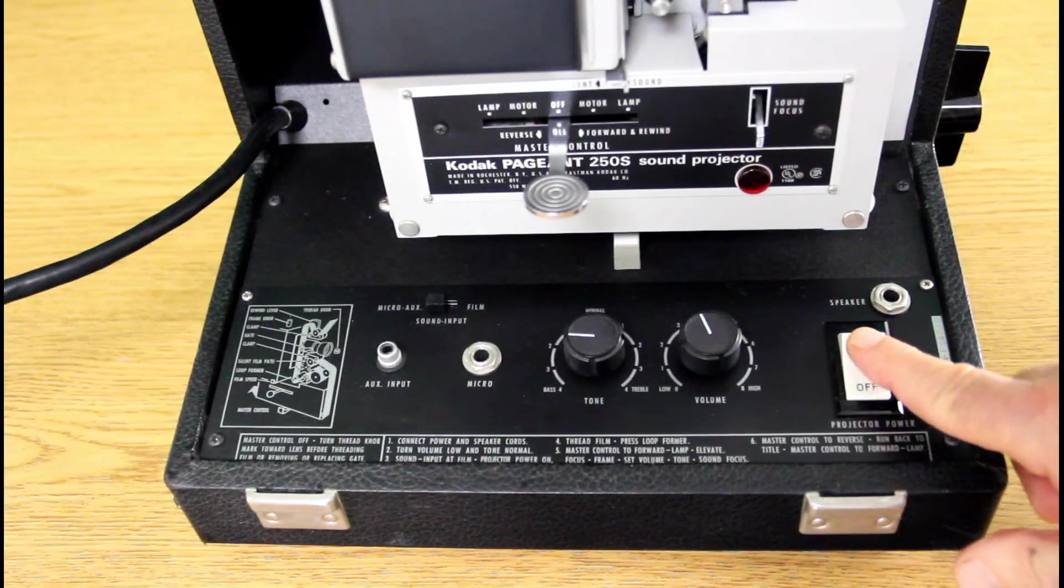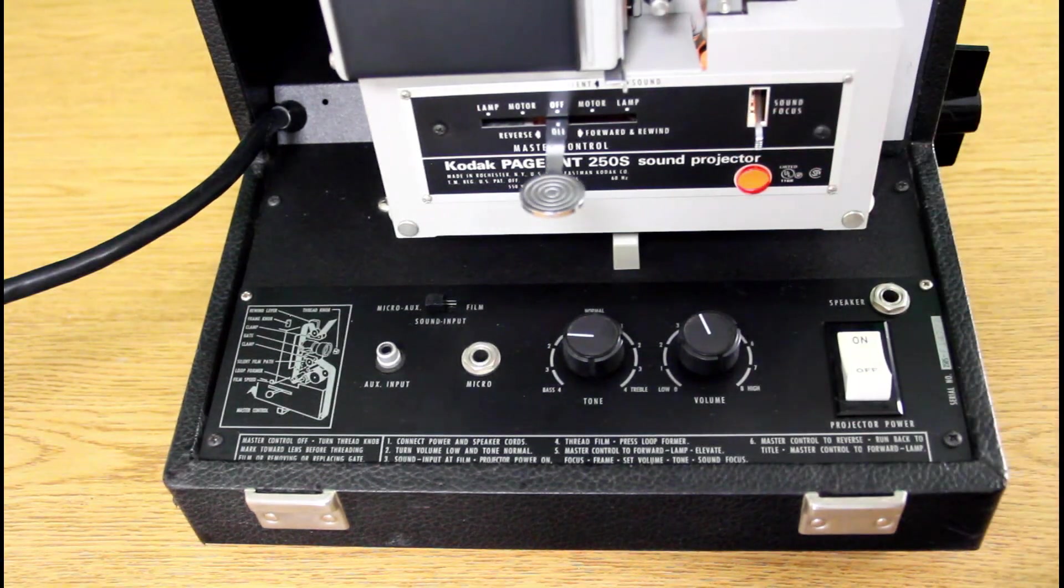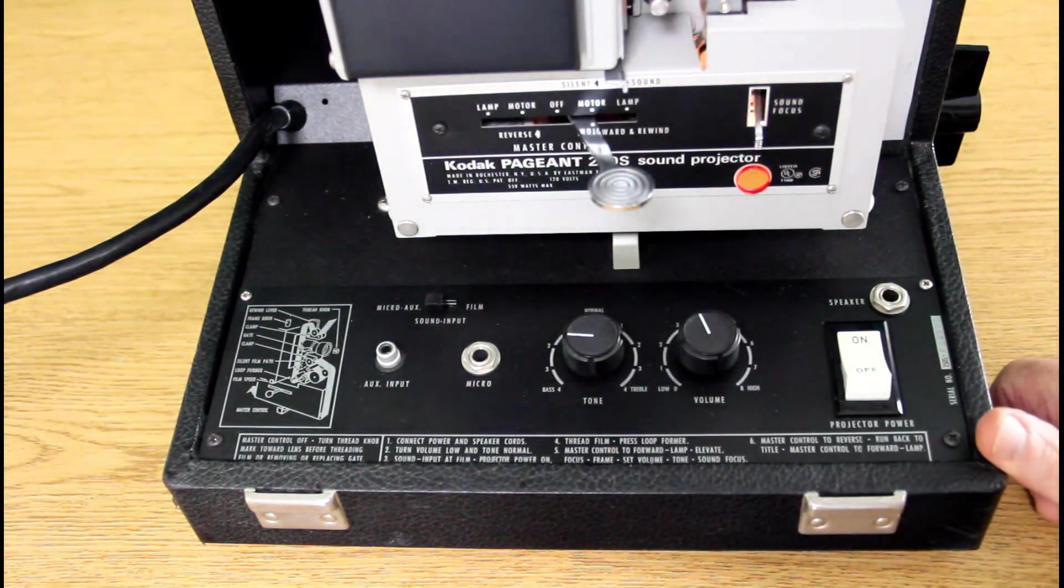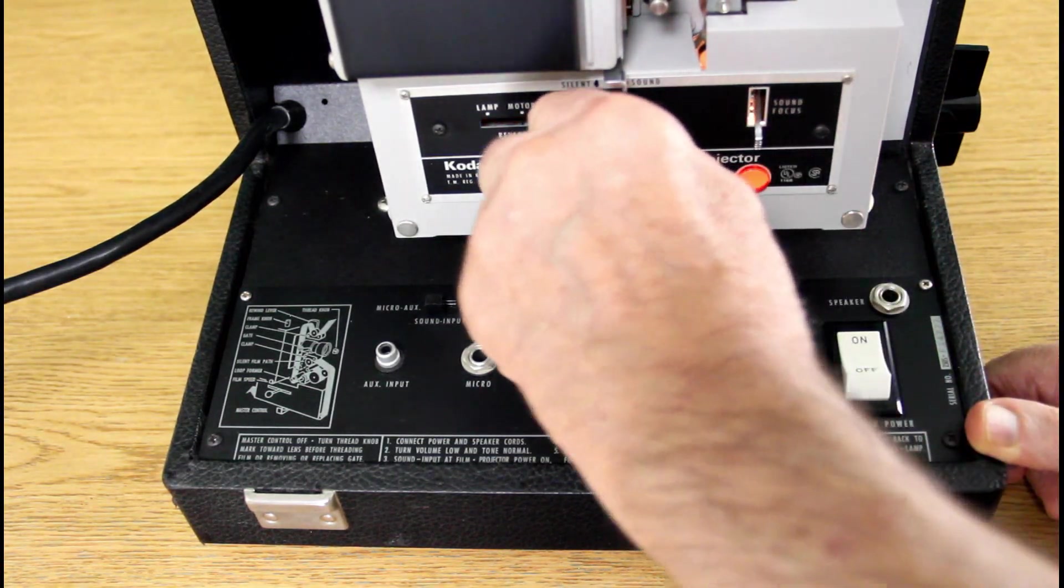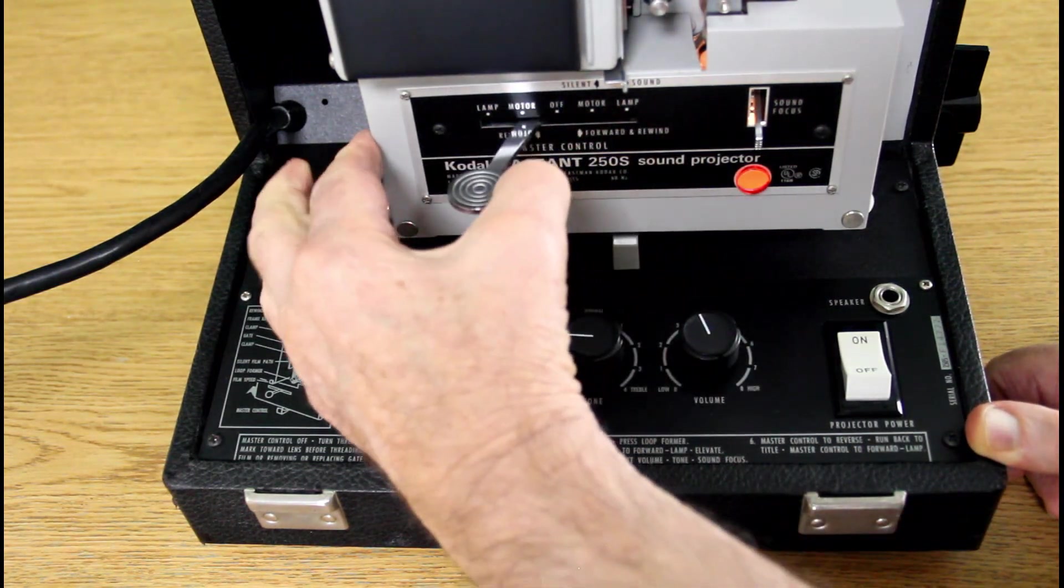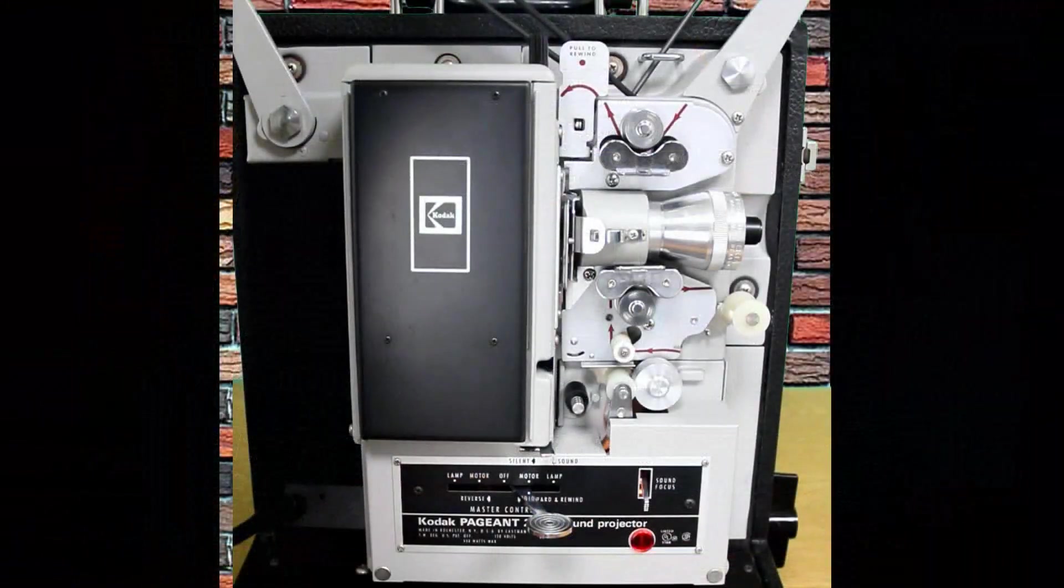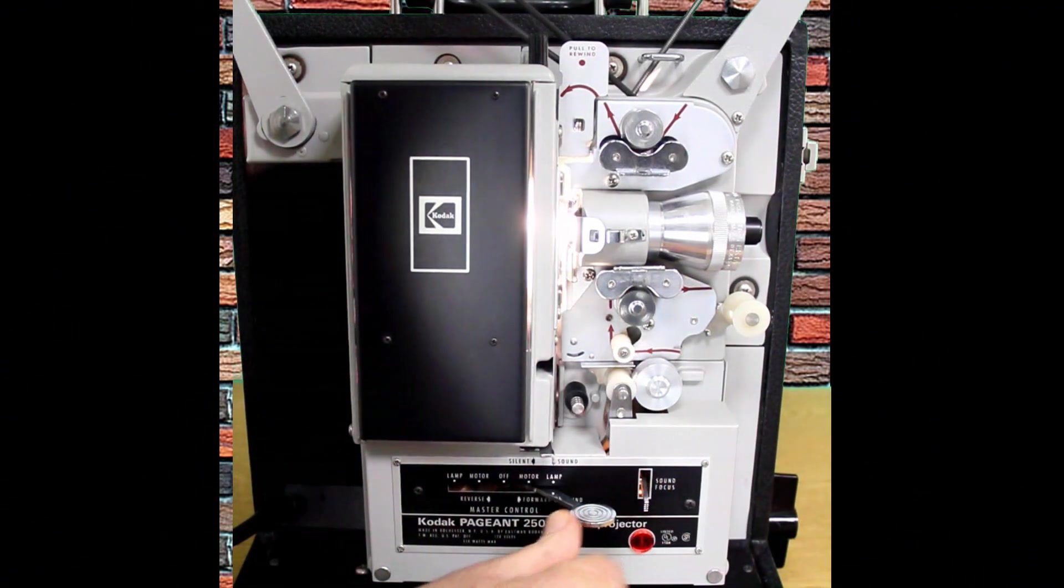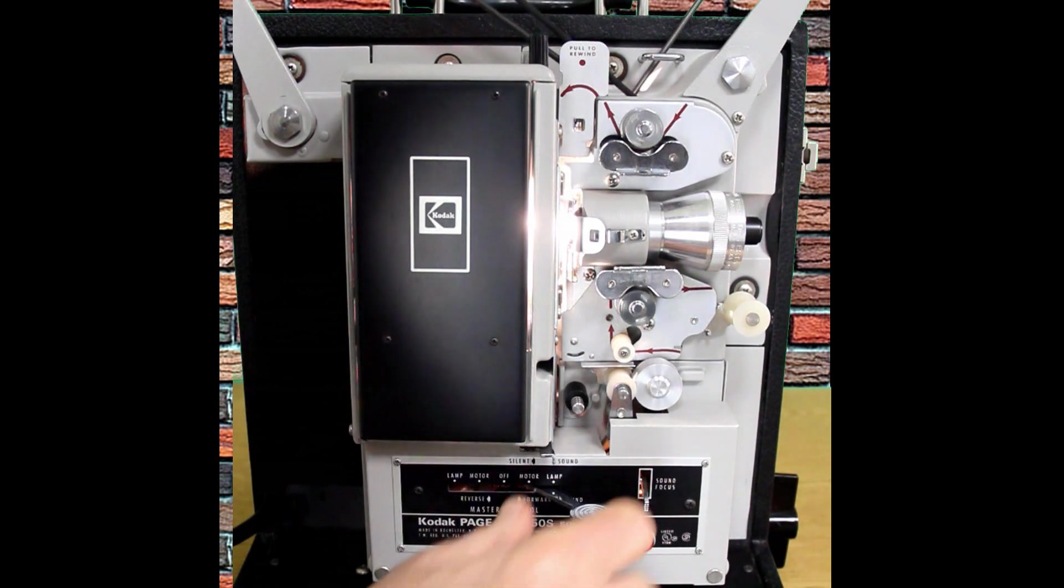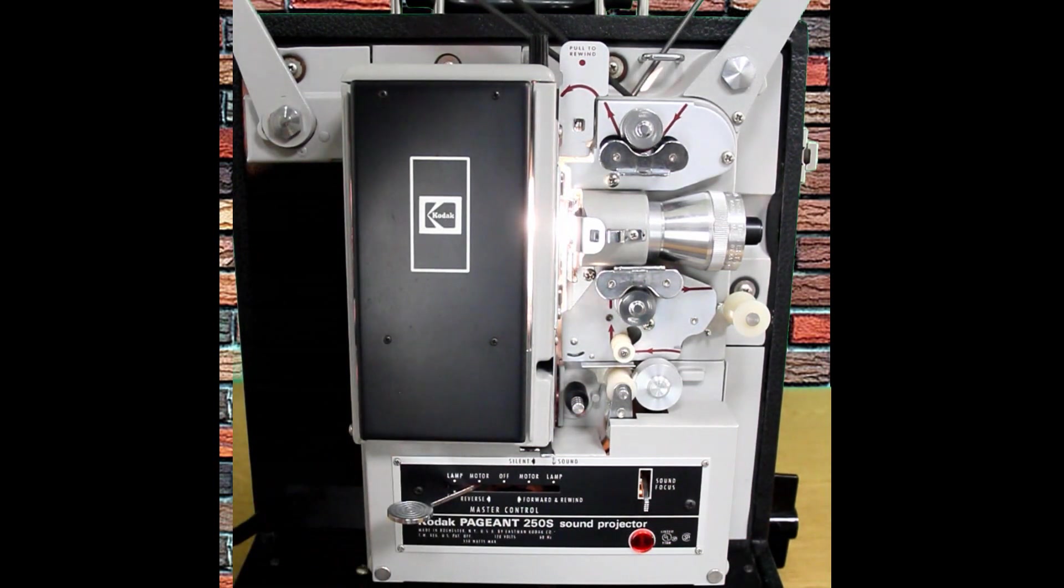Power off, power on, a little red light comes on. Forward without the light. There's forward with the light. That's off. And then this is reverse motor only. Motor and lamp.